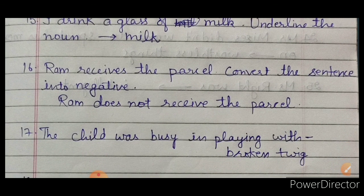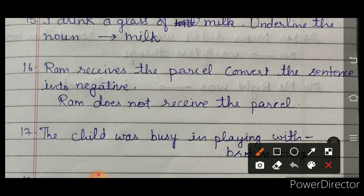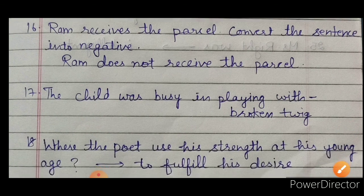The 16th question: 'Ram receives the parcel — convert the sentence into negative.' To make it negative, we need a negative word, so 'not' will come. The verb has 'S' or 'ES' in its first form, so we add 'ES' with 'do', making 'does'. After using 'does', we remove the 'S' from the verb. So: 'Ram does not receive the parcel.'